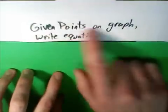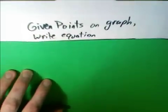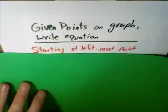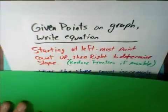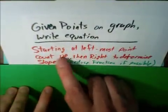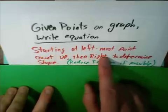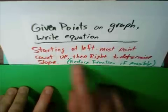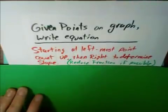In this video, we'll start with two points on a graph and we'll write an equation. To do this, we're going to start at the leftmost point. So we're going to count up and to the right. I don't want to necessarily go up. It may go down if it's got a negative slope, but we will count steps to determine the slope. If we get a fraction, we're going to reduce it.